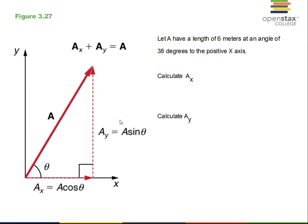The original vector is always the hypotenuse. So the component Ax equals A times cosine theta, and the component in the vertical direction — the y direction — equals A times sine of theta.